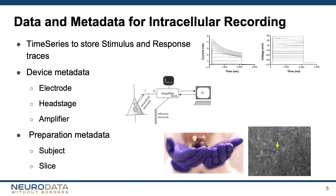There are multiple types of data and metadata that we need to store for complete descriptions of intracellular recording sessions. This includes time series to store stimulus and response voltage and current data, as well as a structure for grouping simultaneously generated waveforms together to facilitate later analysis. We need to store metadata for devices such as electrodes, amplifiers, and analog-to-digital converters, and we also need fields to include metadata for the experimental preparation, including information about the experimental subject and the slice preparation.